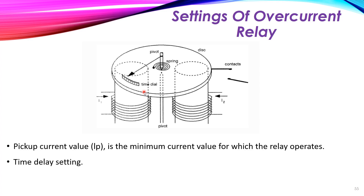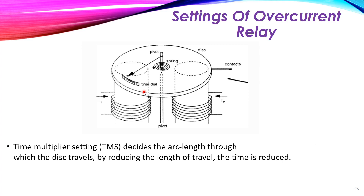Another definition is the time delay setting. We want to give our relay a specific time delay — we don't want the relay to operate as fast as possible, but rather after a certain delay time. So how do we achieve this inside the overcurrent relay?